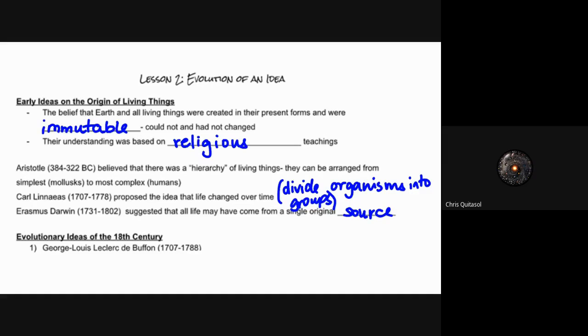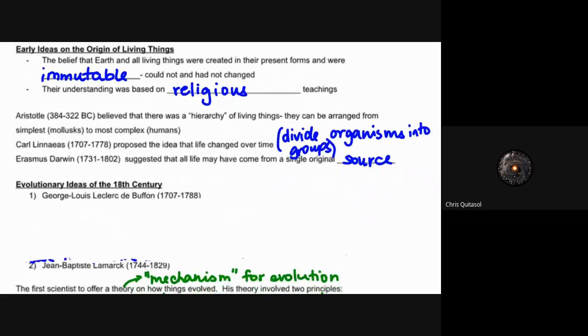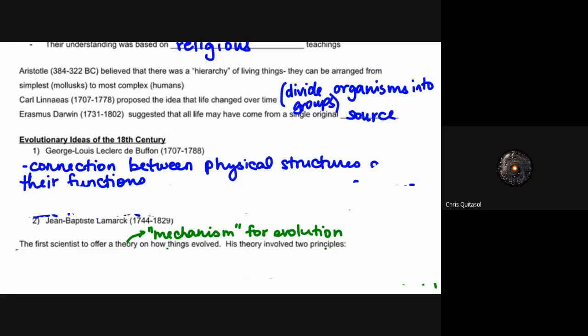When we look at the 18th century, specifically the evolutionary ideas of George-Louis Leclerc de Buffon from the 1700s to the late 1700s, he really looked at the idea that physical structures connected to their function. When we think about how our hands, arms, and legs function, the structure which they possess is a direct result of the function which they possess. Very few people do their fine motor skills with their feet, and very few people run marathons on their arms. Our appendages specifically function for specific tasks, and those physical structures developed to perform that function specifically.